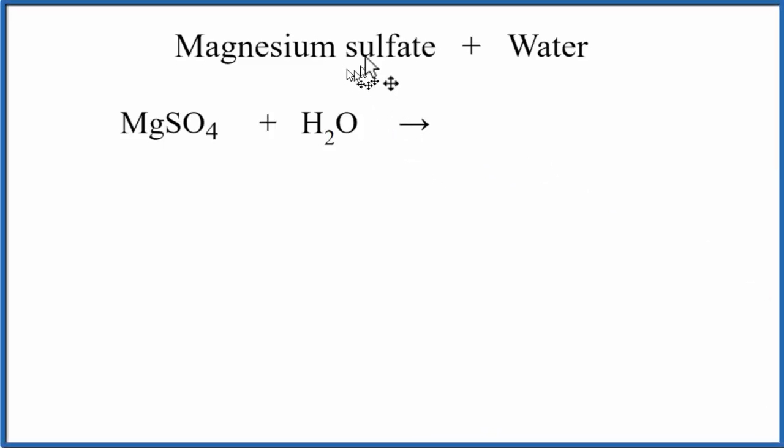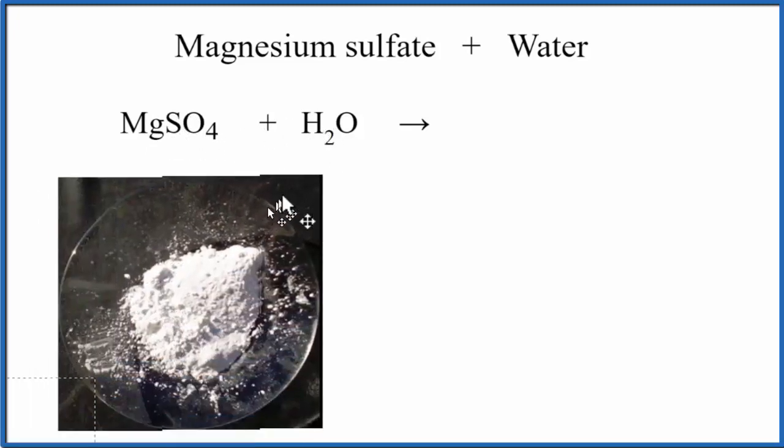In this video, we'll talk about what happens when you put magnesium sulfate in water. So that's MgSO4 plus H2O. This one's a little bit tricky, so let's take a look at MgSO4.